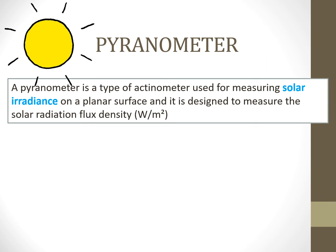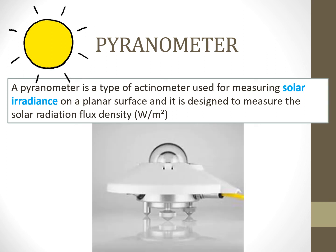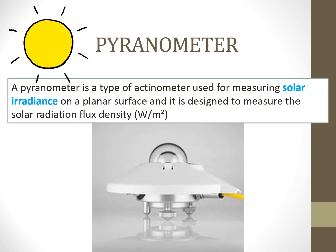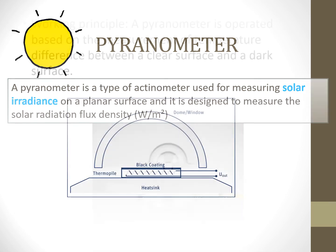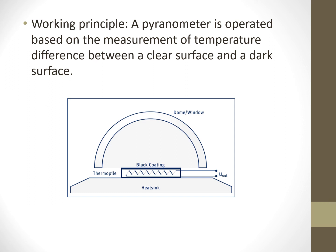A pyranometer is designed to measure the solar radiation flux density in watts per meter squared. Solar radiation is a source of energy which includes visible light as well as non-visible parts of the spectrum. The pyranometer operates based on the measurement of temperature difference between a clear surface and a dark surface, since a clear surface reflects solar radiation while a dark surface absorbs it.